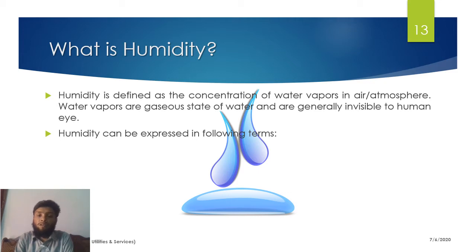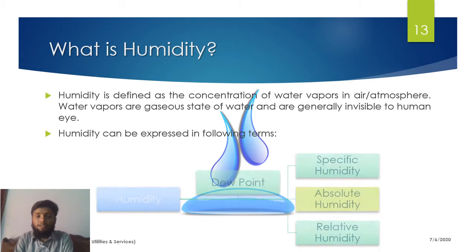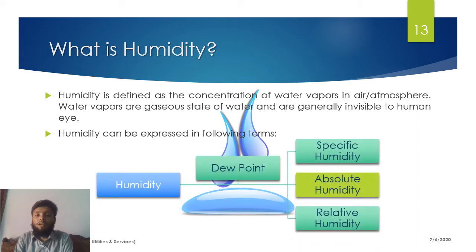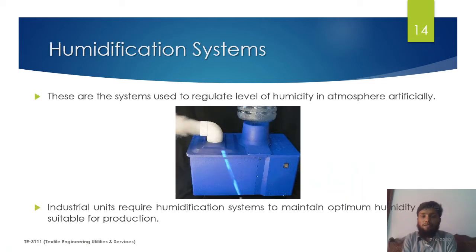Humidity can be expressed in the following terms: dew point, specific humidity, absolute humidity, and relative humidity — all of which have their specific definitions. Humidification systems are systems designed to provide an optimum level of humidity to any closed environment artificially.